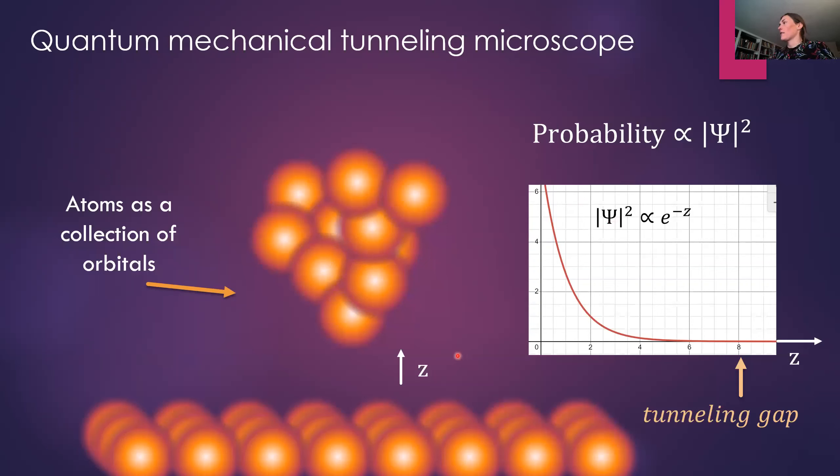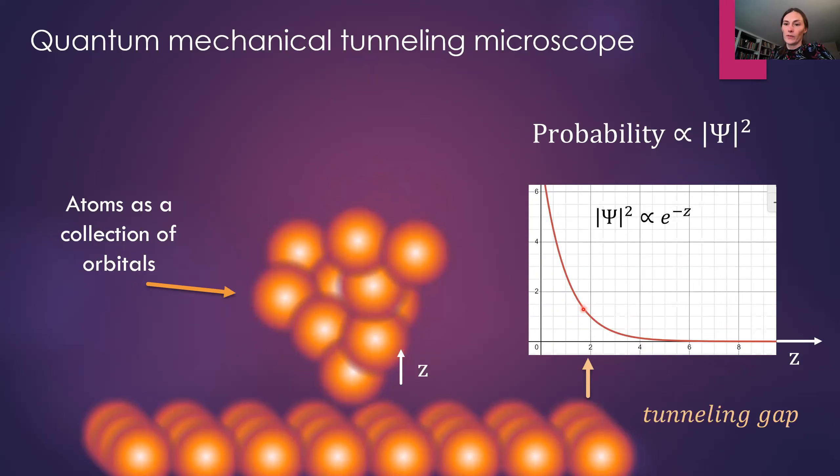And here I've plotted psi squared for the wave function in the sample as a function of the tunneling gap, the distance between the tip and the sample. So as you move the wire closer to the sample, you decrease that tunneling gap and the probability that you're going to find the electron in the sample goes up. And it goes up exponentially. This means that you're extremely sensitive to changes in height right at this junction. So that is the entire principle of the tunneling microscope.